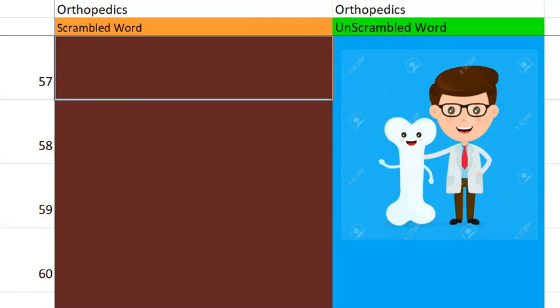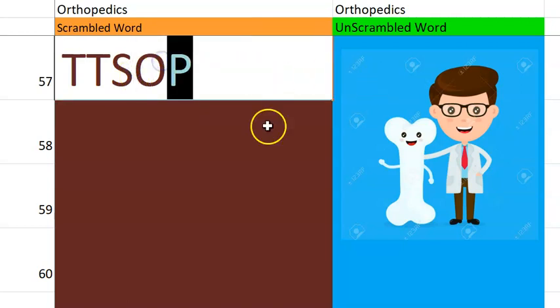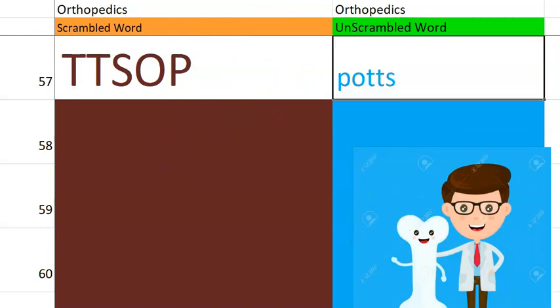Coming to the 57th one — something to do with tuberculosis and the spinal cord. Pott's spine. Very good.